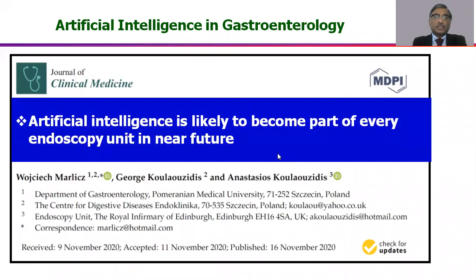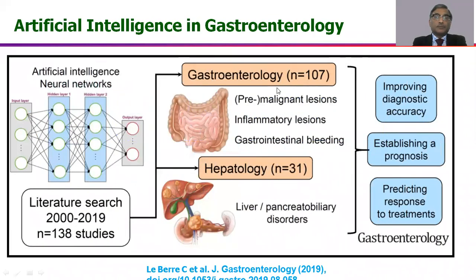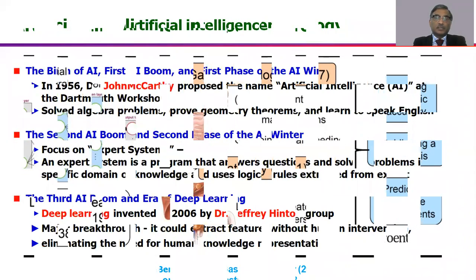This is so because artificial intelligence is likely to become part of every endoscopy unit in the very near future and it will be dominating for quite some time. Looking at PubMed, in the last one year we have 107 papers in gastroenterology on artificial intelligence and in the field of hepatology there are 31 papers, so you can understand how fast it is moving.